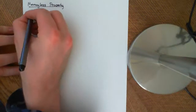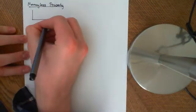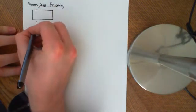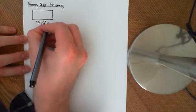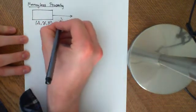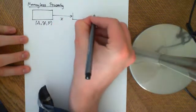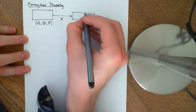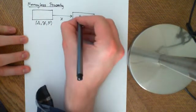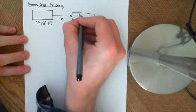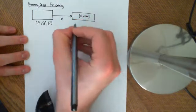Let's say we have some abstract probability space, omega curly F with a probability measure P. And we have some random variable X, which is mapping onto the positive real numbers, so zero to infinity.